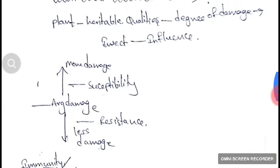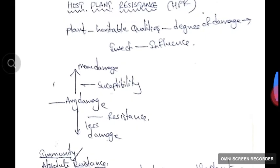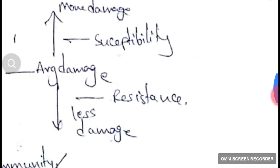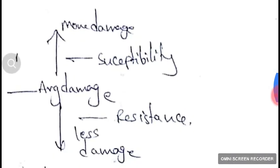Host Plant Resistance: every plant possesses some heritable qualities which influences the degree of damage by insects, which is termed as HPR or host plant resistance. If damage is more than average damage, it is called susceptibility. If damage is less than average damage, it is called resistance.